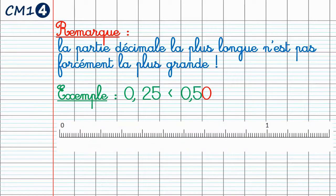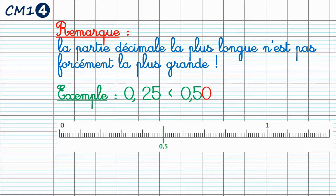Observons maintenant sur une demi-droite graduée si l'exemple correspond à la réalité. Je vais d'abord placer mes 5 dixièmes : 1, 2, 3, 4, et 5 dixièmes. Je vais ensuite placer mes 25 centièmes : 10 centièmes, 20 centièmes, puis 1, 2, 3, 4, 5. Maintenant que mes deux nombres décimaux sont placés sur ma demi-droite graduée, je peux voir clairement que 0,25 est effectivement plus petit que 0,5.